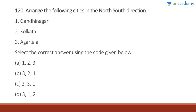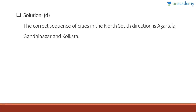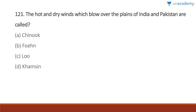Question 120: Arrange the following cities in north-south direction. Agartala is the northernmost city, then Gandhinagar, then Kolkata. Answer is 3-1-2. The correct sequence of cities in north-south direction includes Agartala, Gandhinagar, and Kolkata. These types of map-based arrangement questions are very common in exams.